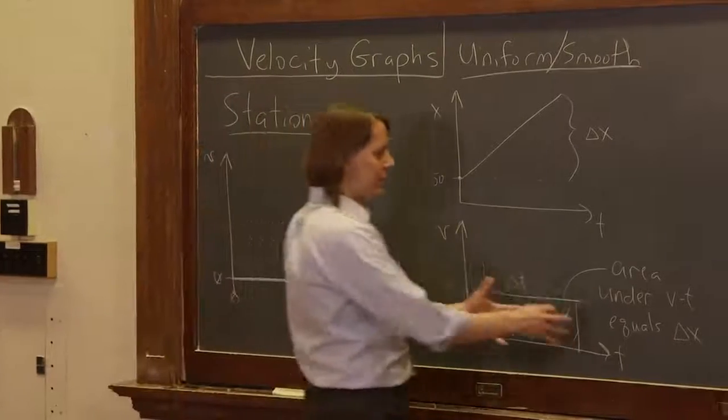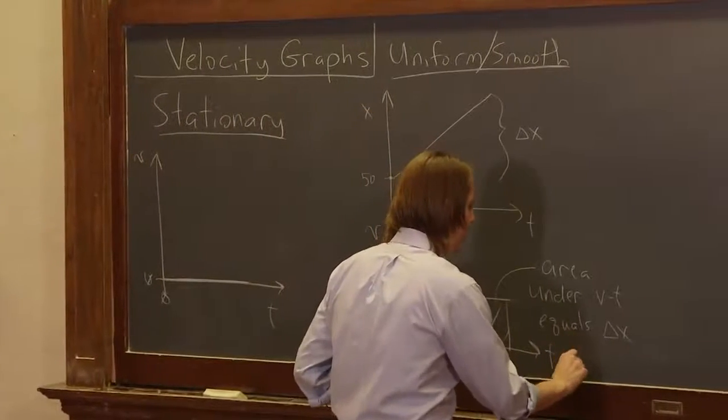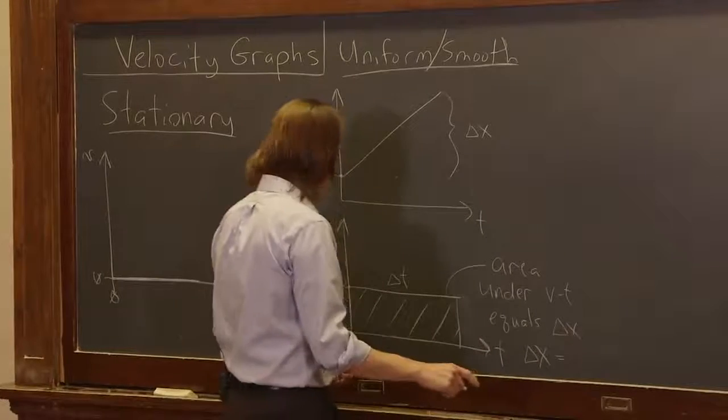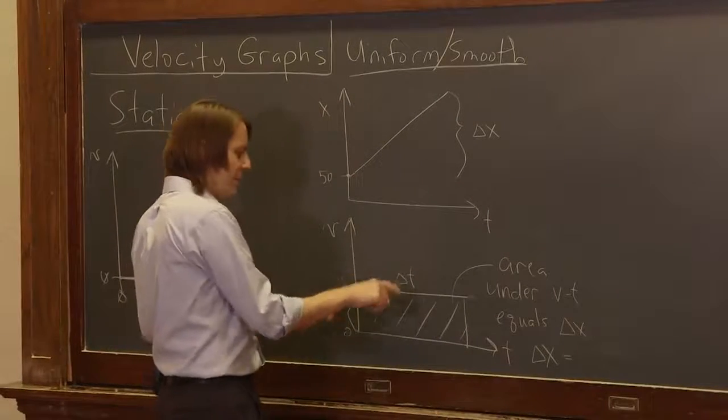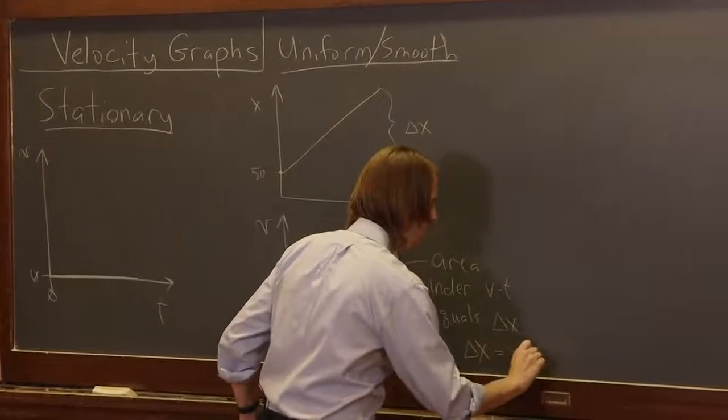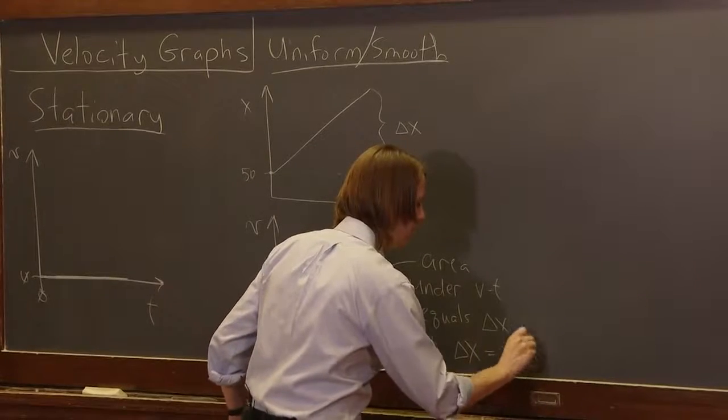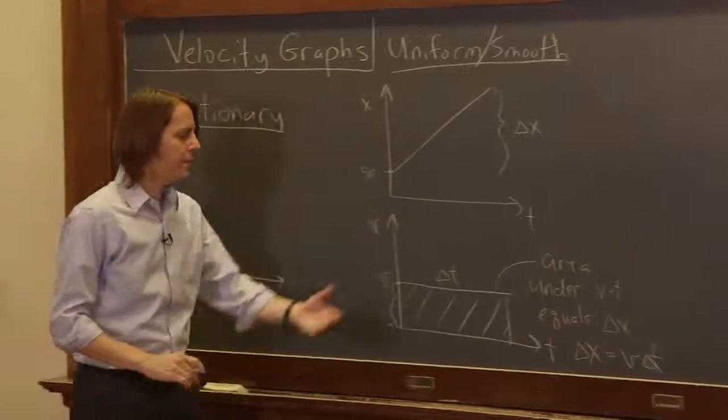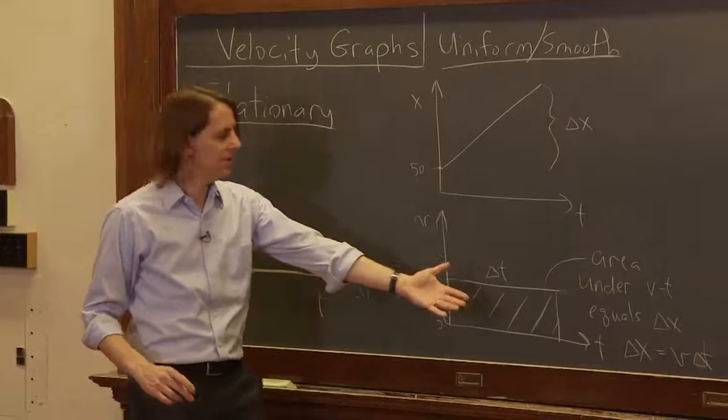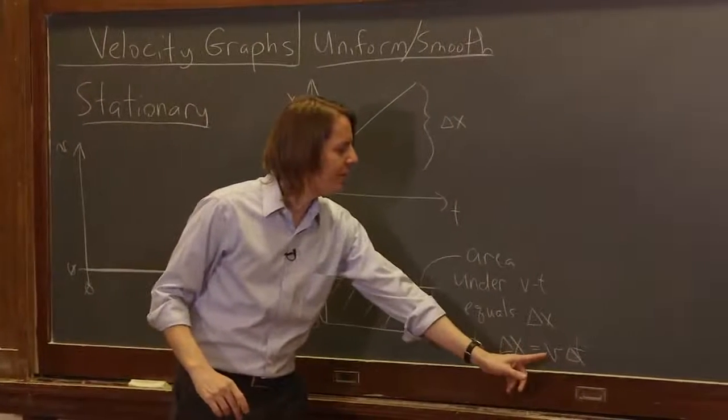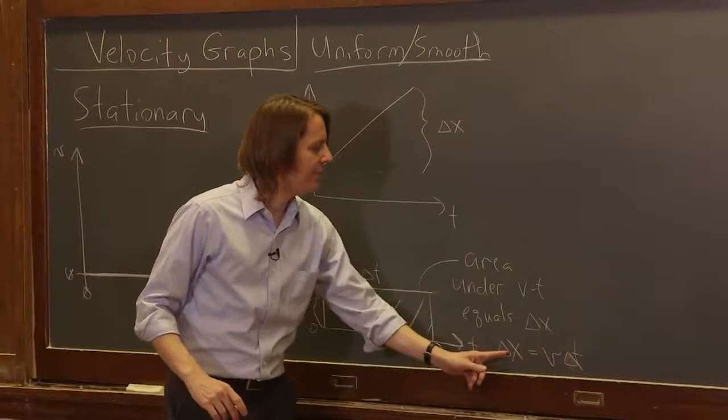So what this thing is telling us is that delta x equals what? This area: v times delta t. And sure enough, that's the definition of the average velocity, right? Delta x equals v delta t. Solve that for v and it's v is delta x over delta t.